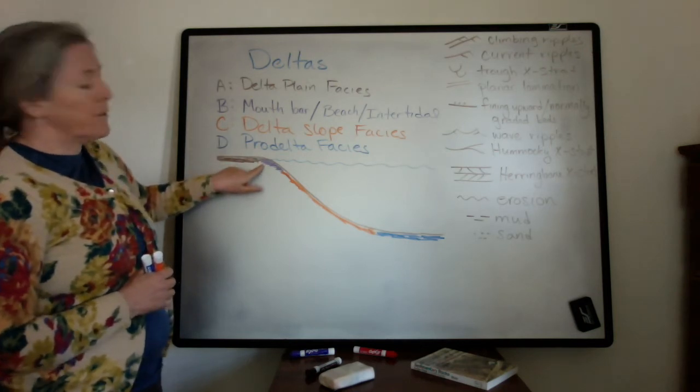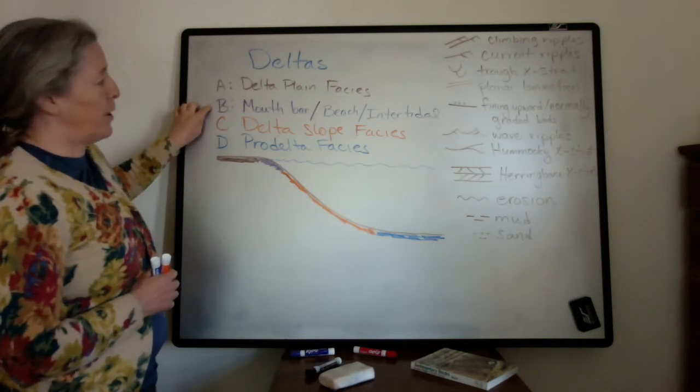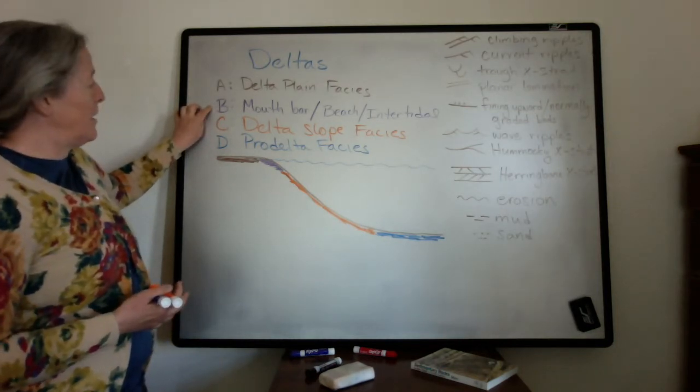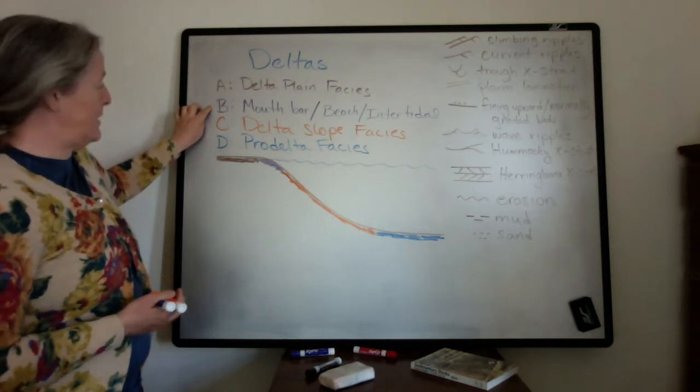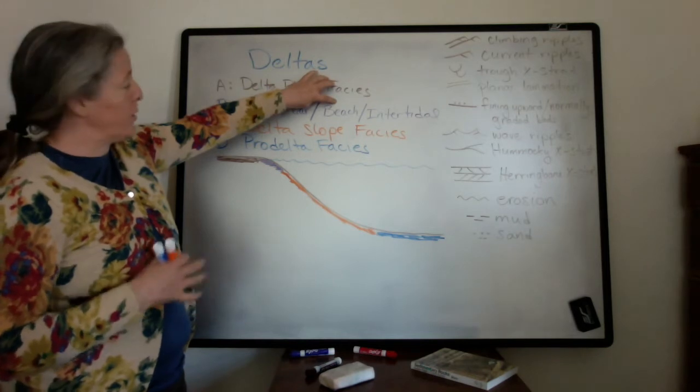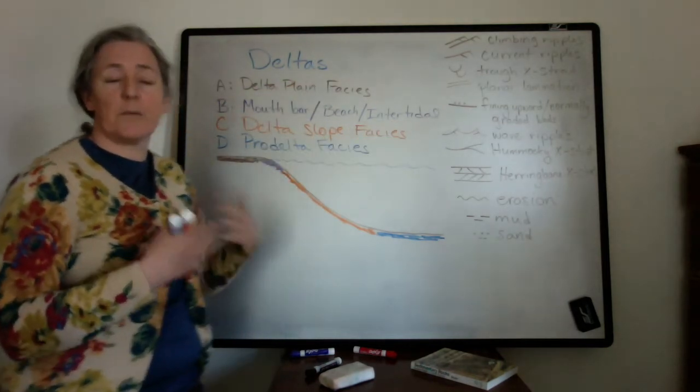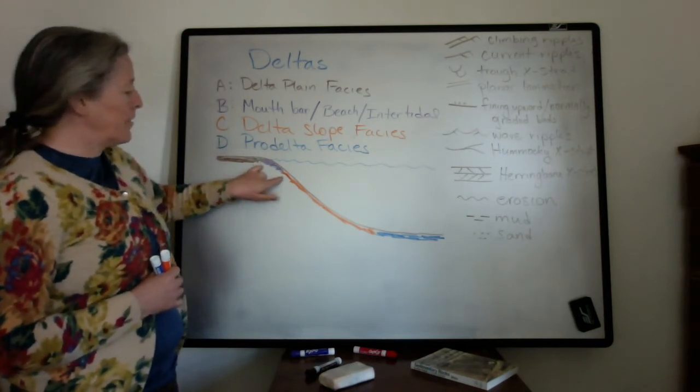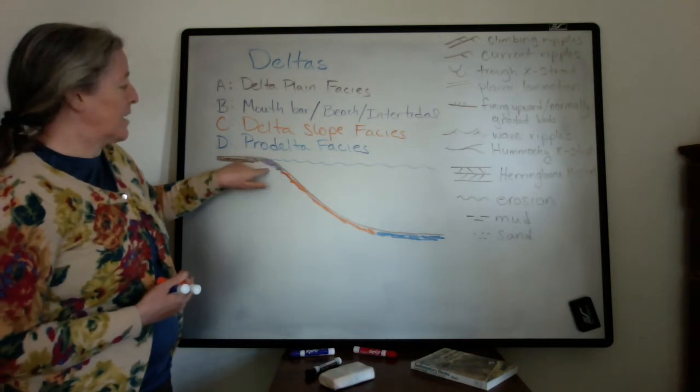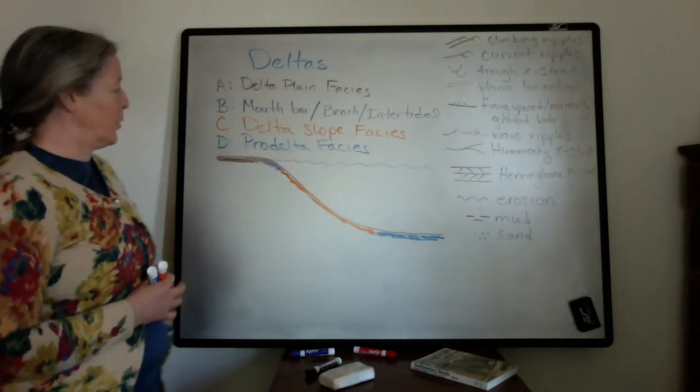Right where the river meets the standing water, I've defined a mouth bar facies, which would be characteristic of river dominated deltas. If you have waves, that would include beaches and shoreline features. And if you have tides, that would include some of the tidal flow type features. This part of the delta is the most variable because it has high energy and it's influenced by the various transport processes.